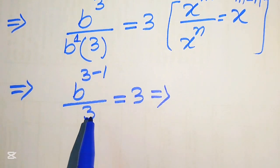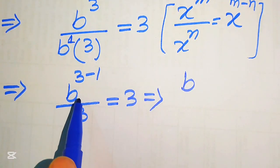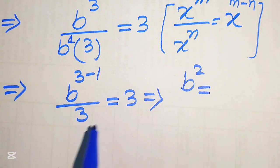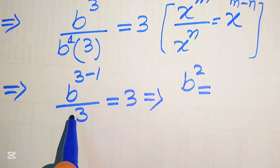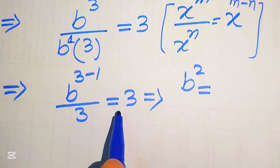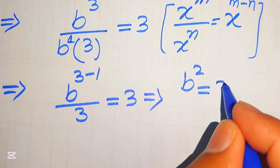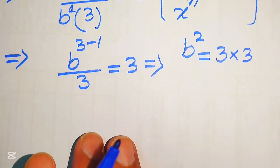This equation gives us b to the power of 3 minus 1, which is b squared, divided by 3 equals 3. Moving the 3 from the denominator to the right-hand side gives b squared equals 3 multiplied by 3.